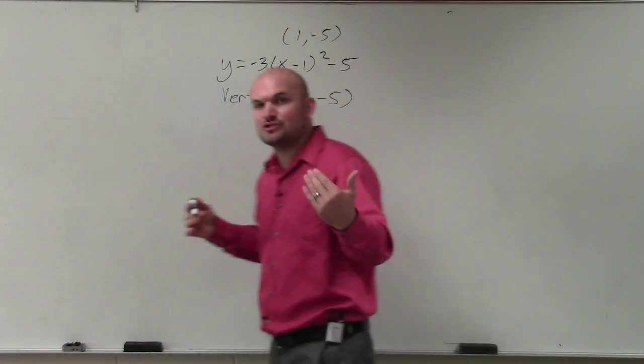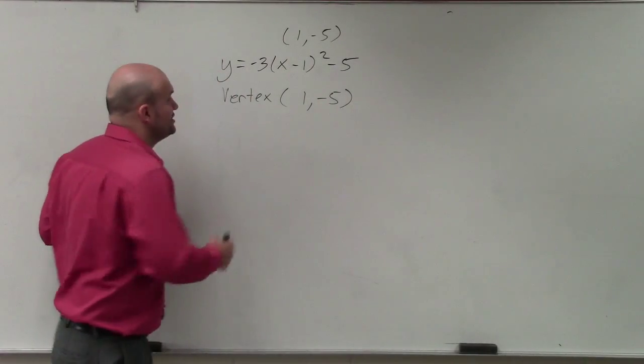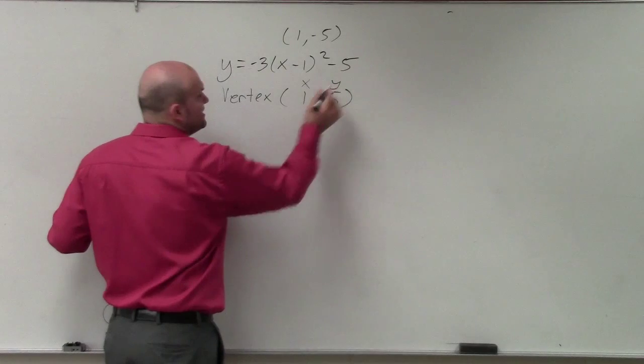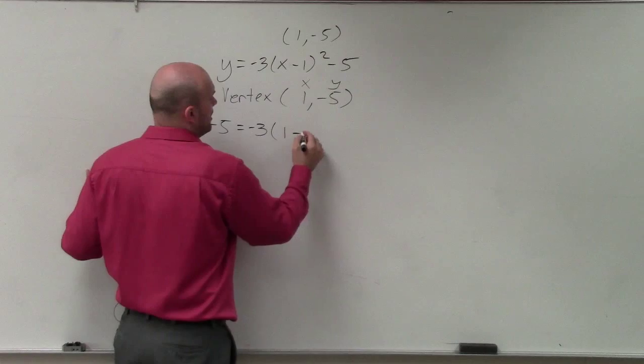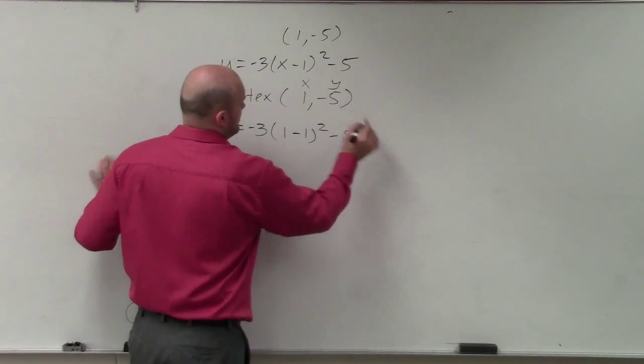Now, to prove that algebraically, what you simply need to do is plug in these coordinate points for x and y. So it's negative 5 equals negative 3 times (1 minus 1) squared minus 5.